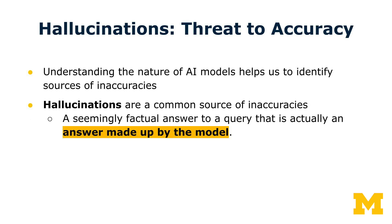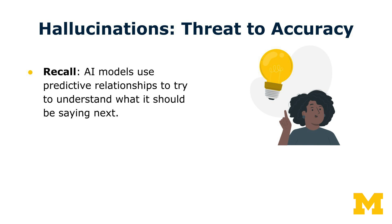If artificial intelligence gets factual information wrong in a context where high accuracy matters, all sorts of risks can ensue. There are a number of reasons that AI outputs can be inaccurate. One particular area of note is what are called hallucinations — cases where an AI model may provide what seems like a factual answer to a query that is actually made up by the model. This can occur because AI uses predictive relations to try to understand what it should be saying next, and those predictive relations may not yield an accurate answer, either because there's not enough information in the model, or because the model is providing plausible-sounding responses without any real underlying memory to fact-check the information it provides.